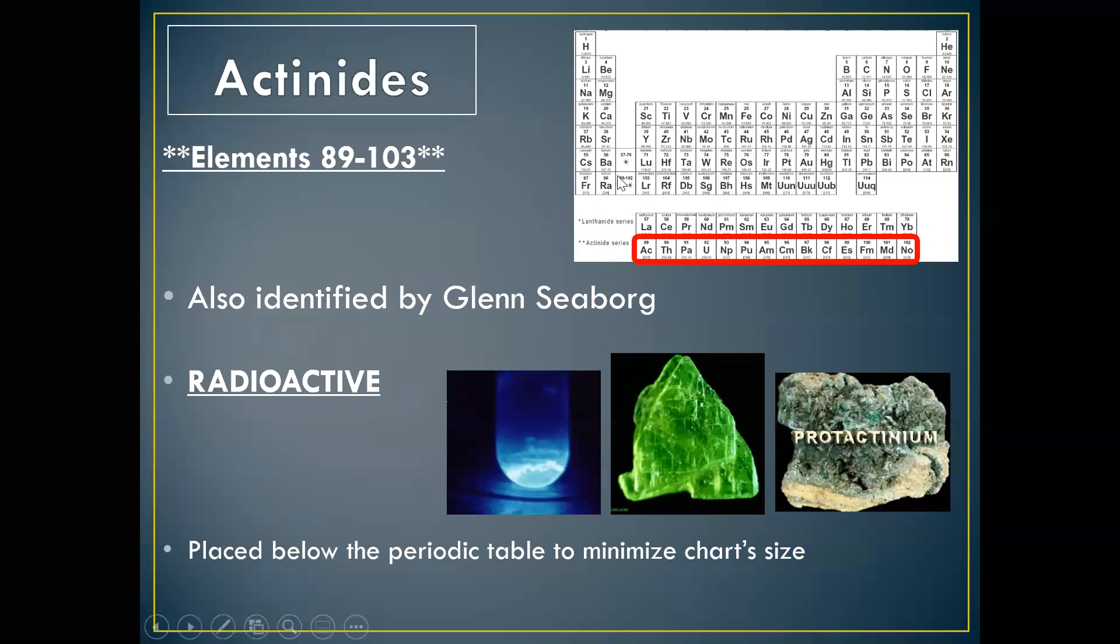Once again, just because if you didn't have them below, you'd have to put them into period seven, which would extend the periodic table. These do not have a group number. They are all in just period seven. So quick video on the lanthanides and actinides.